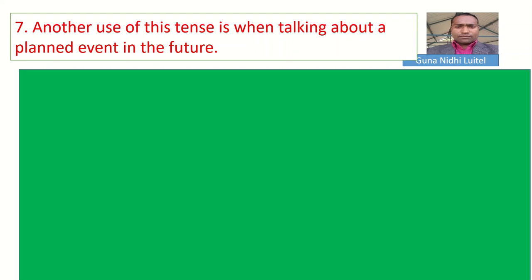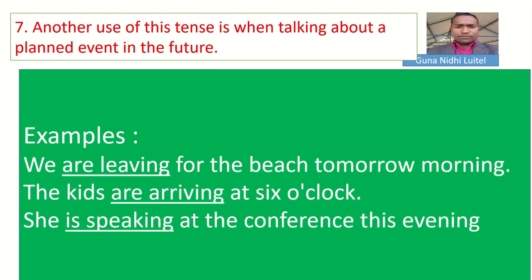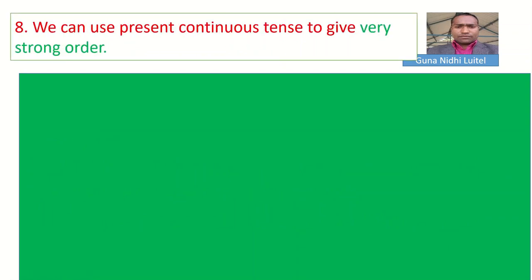Let us learn another rule — another use. When talking about a plan, even if the action will happen in the future, it is planned. Let us see some examples. 'We are leaving for the beach tomorrow morning' — means we have a plan. 'Kids are leaving at 6 o'clock.' 'She is speaking at the conference this evening' — means there will be some preparation. These are planned future actions.